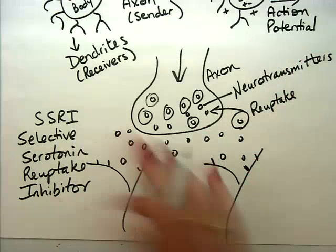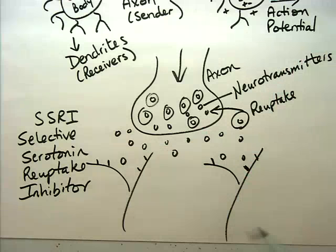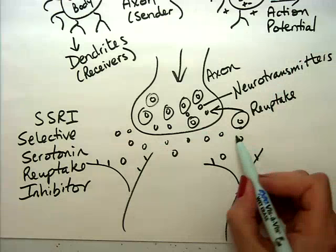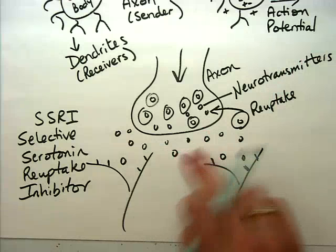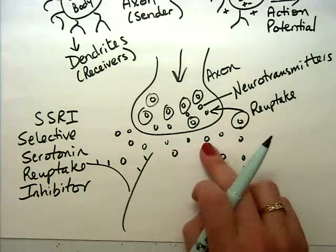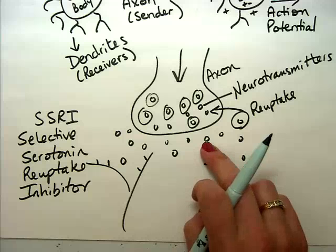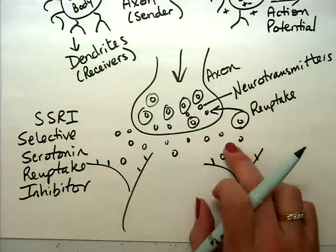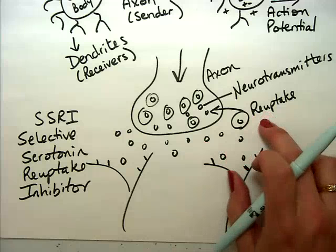So what happens, and I use this example just so you can conceptualize what happens here. A lot of medications will work on these chemicals. Like maybe you need more of a certain chemical, or maybe you need less of a certain chemical. And what the medicines tend to do is they work on the reuptake process.